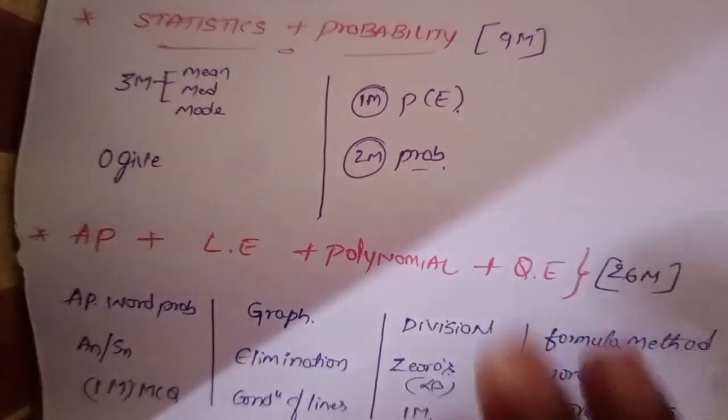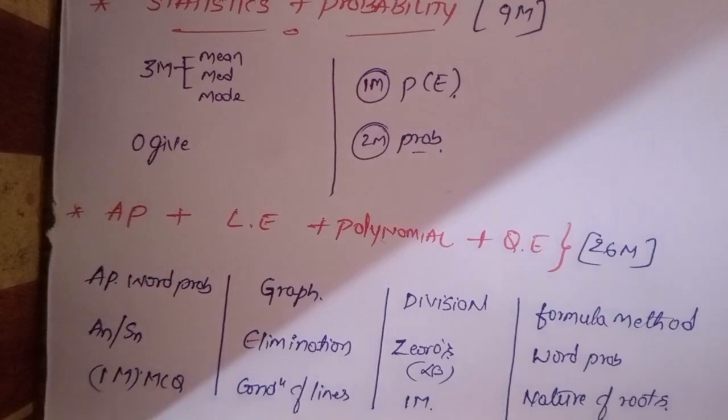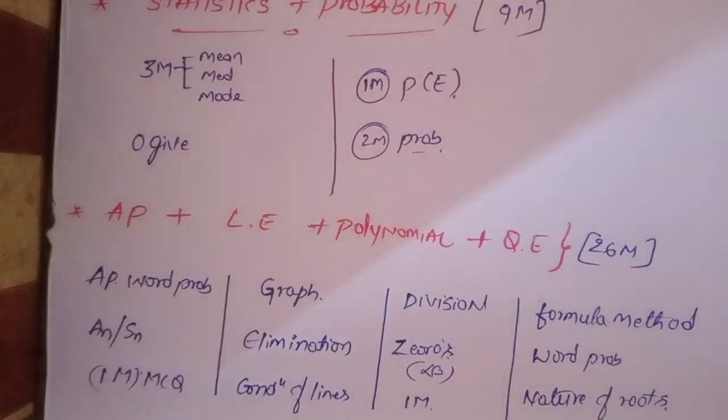Then coming to the major part, 26 marks: AP, linear equations, polynomials, quadratic equations. In this area, 26 marks. First AP has word problem and Sn, one multiple choice, one mark question.